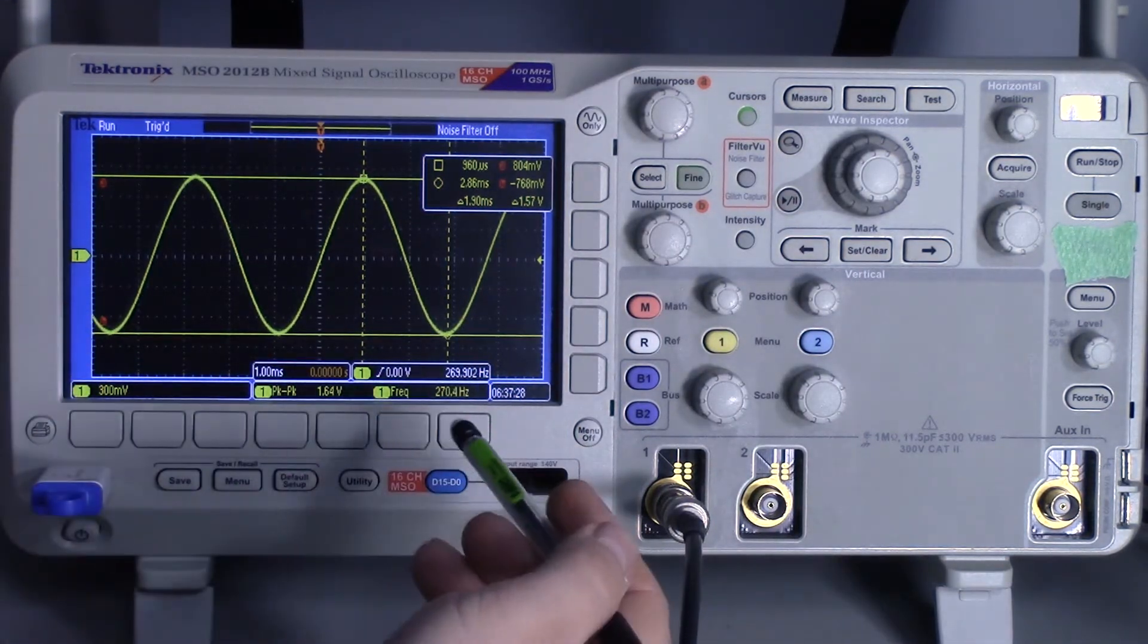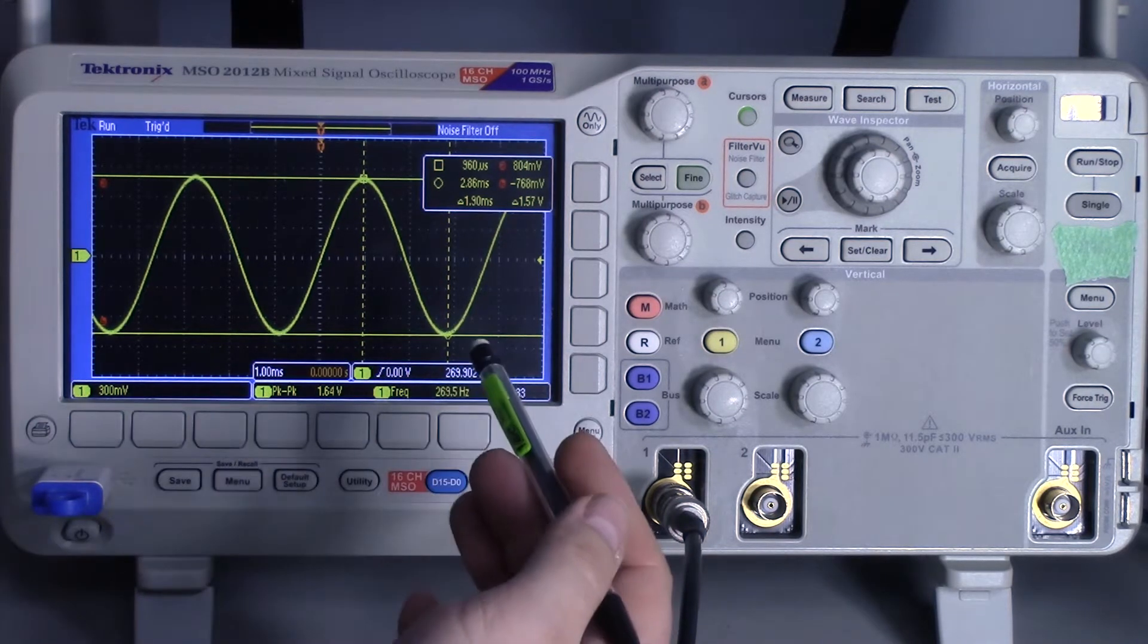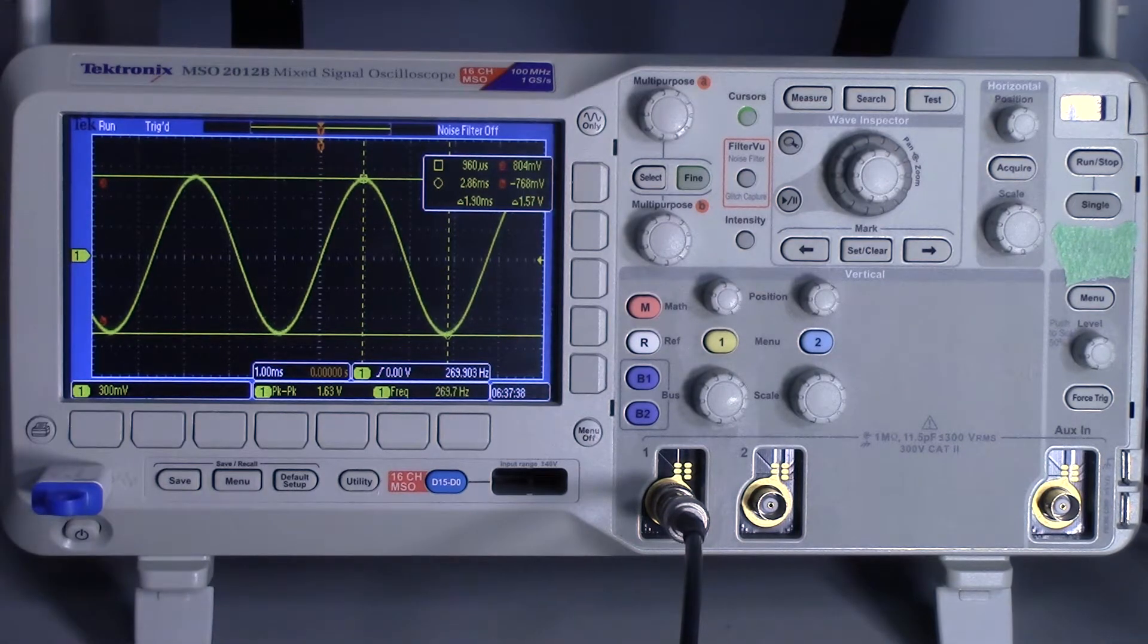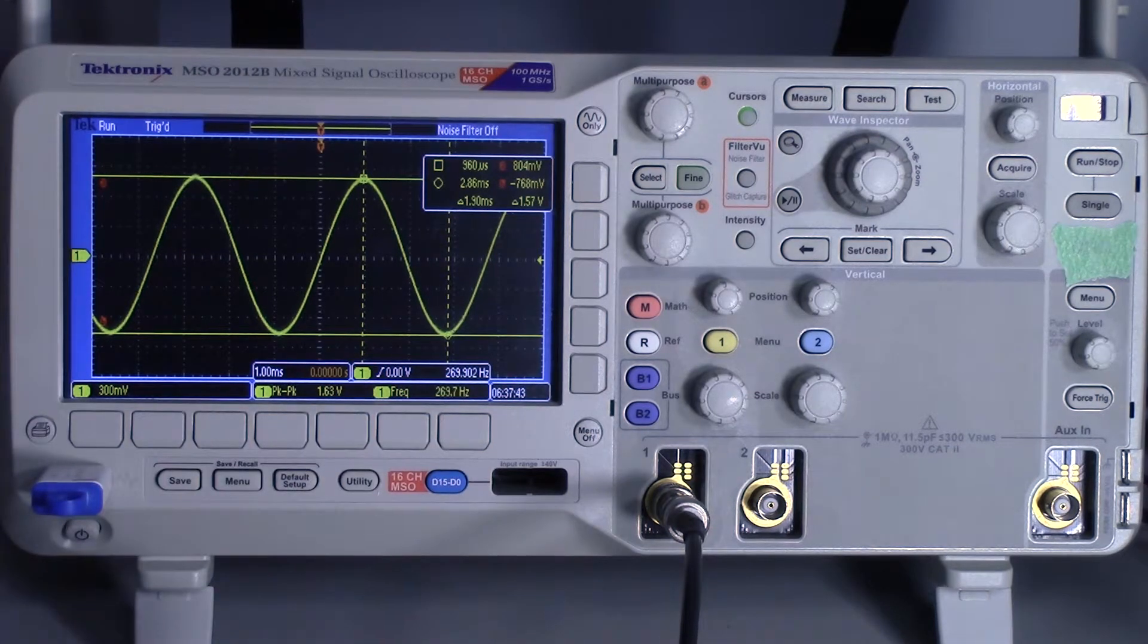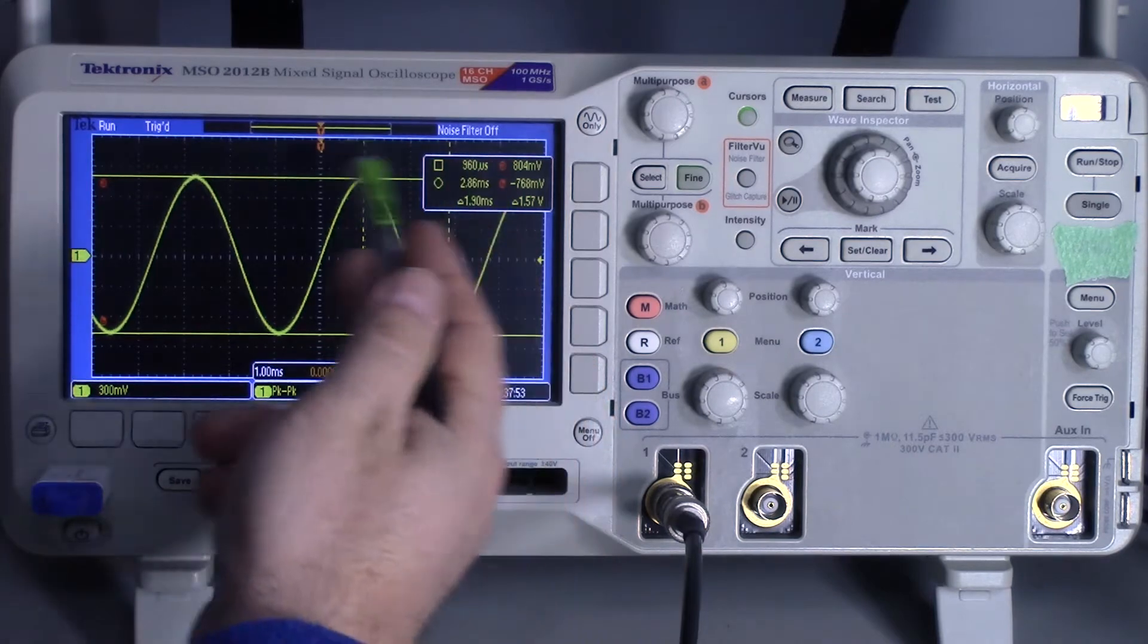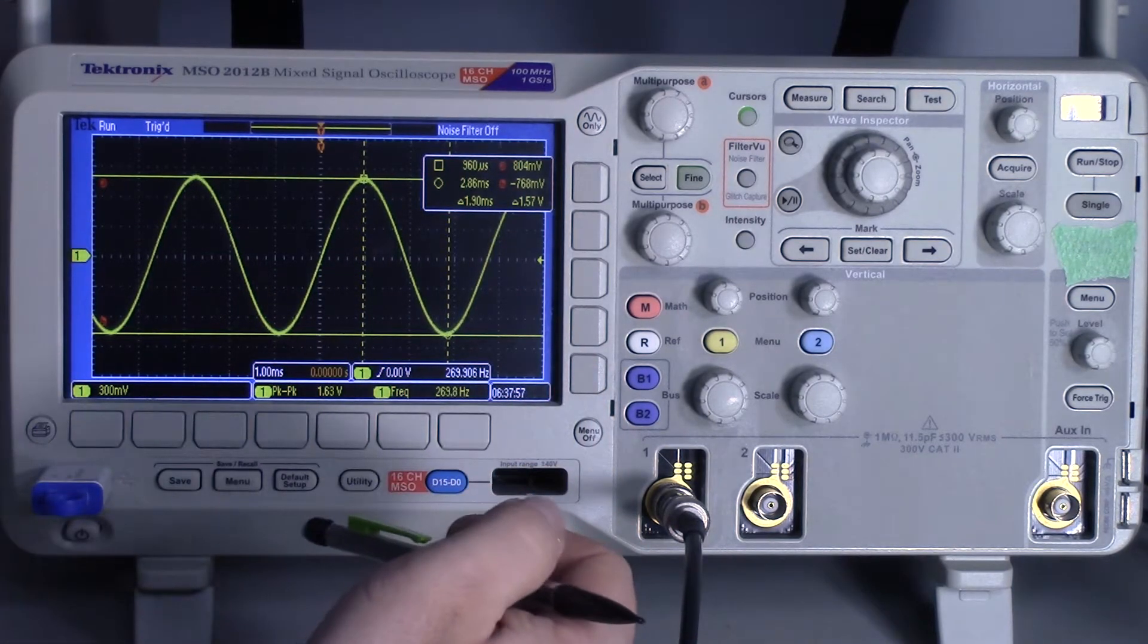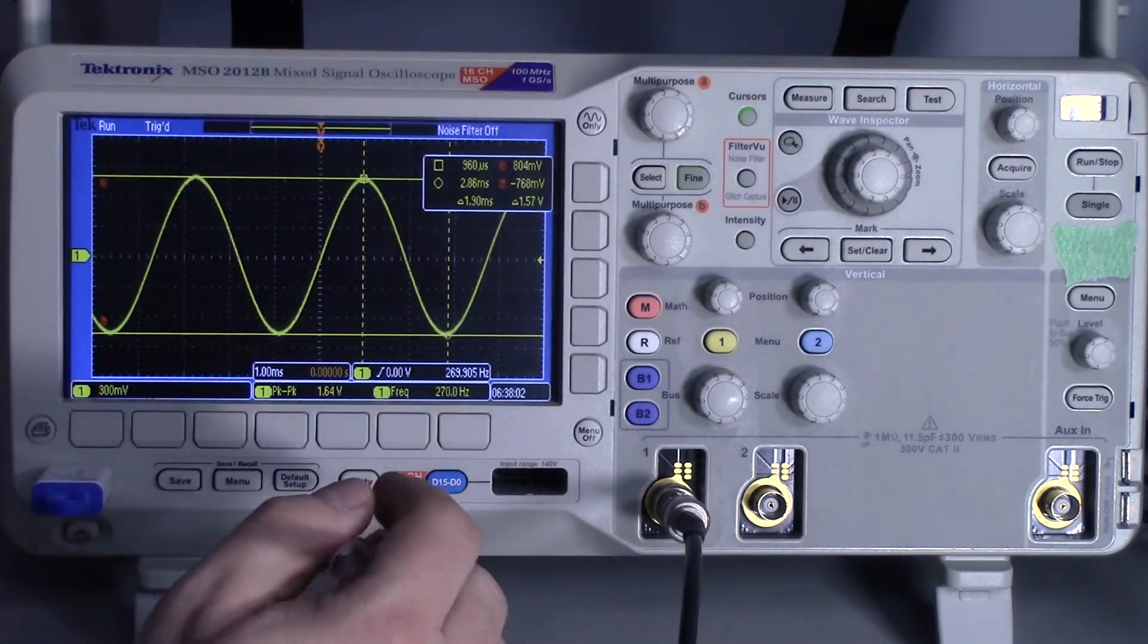You can simply write the information down, but if you want to include this as part of a lab report or something you want to have published, then you need to get an actual screenshot. You can use the camera on your phone, but that's not going to look professional. You're going to have all this black background and it'll be a lot of unnecessary ink.